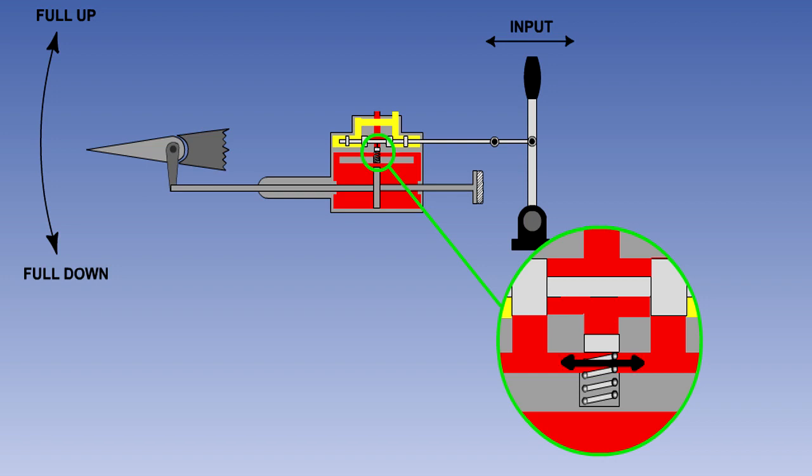This will permit the fluid to flow from one side of the piston to the other, allowing the powered flying control unit to follow the control movement of the other unit.